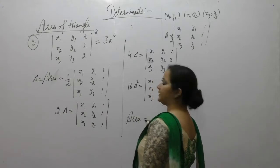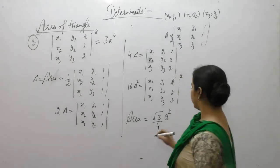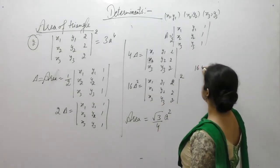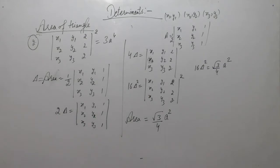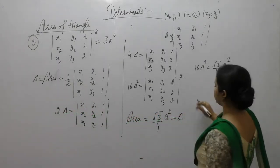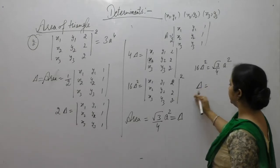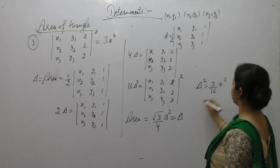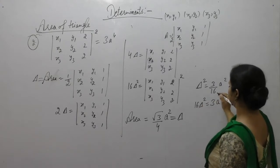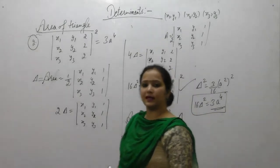So putting this value, since these are areas, 16 delta squared equals (√3/4 × A²)² = 3A⁴/16. Therefore 16 delta squared equals 3A⁴/16 times 16, giving us 3A⁴. This is what we want to prove: the determinant squared equals 3A⁴.